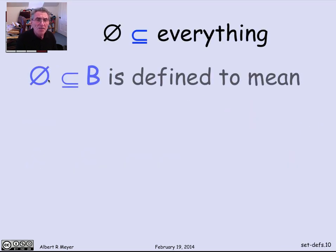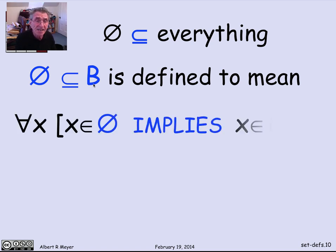So the claim is that the empty set is a subset of everything. Let B be any old set. Then the empty set is a subset of B. What exactly does that mean, according to the definition of subset? Well, it says that everything that's in the empty set, if it's in the empty set, then it implies that it's in B. For every element, if it's in the empty set, then it's in B.